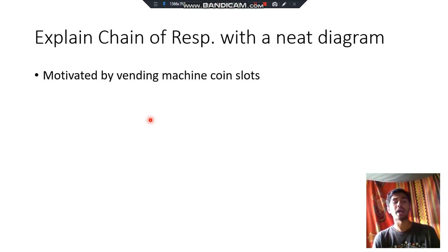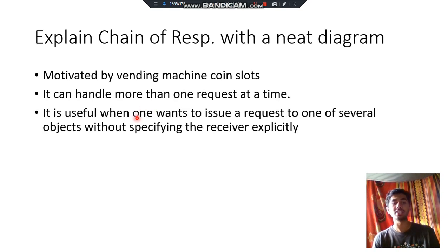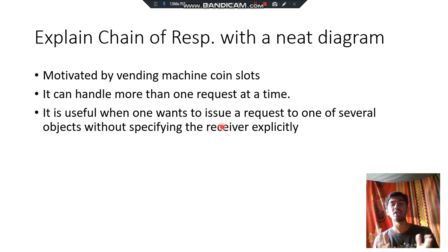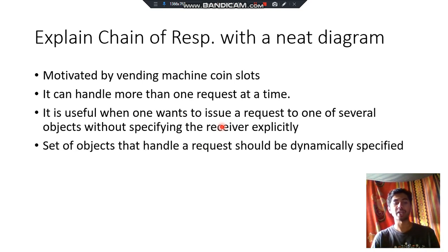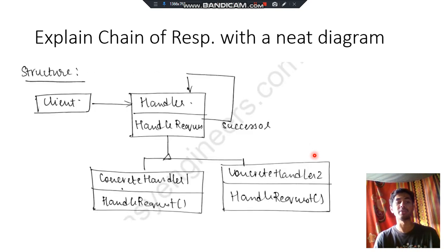It is motivated by the vending machine coin slots — it can handle more than one request at a time. It is useful to issue a request to one of several objects without specifying the receiver, just like a broadcast — you are not specifying the receiver but you're sending it to all. And the set of objects that handle the request should be dynamically specified, because it's not set who is going to handle the object, so it should be dynamic.